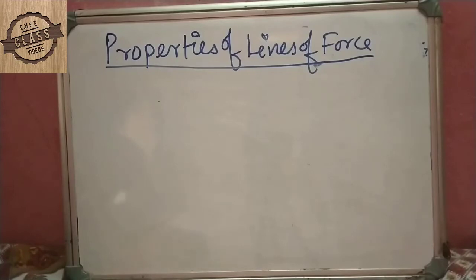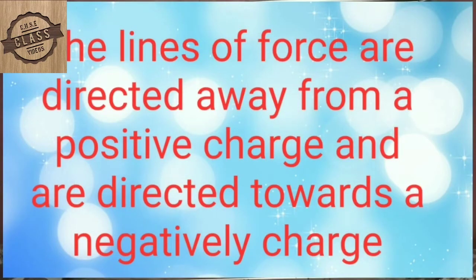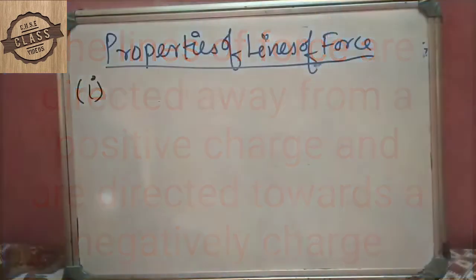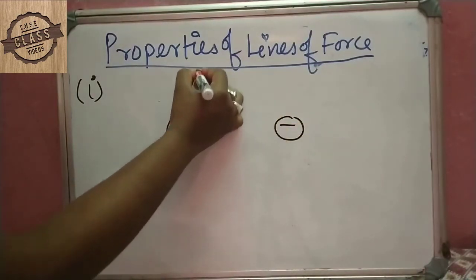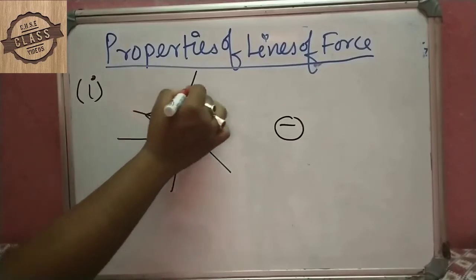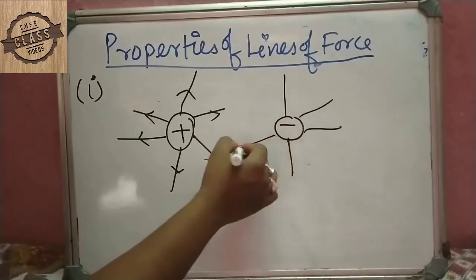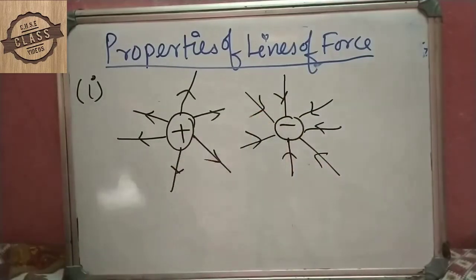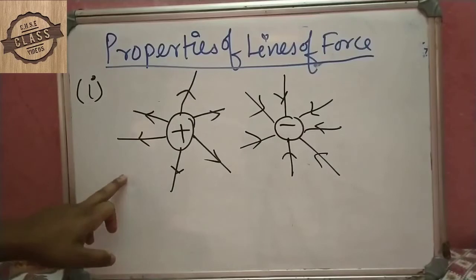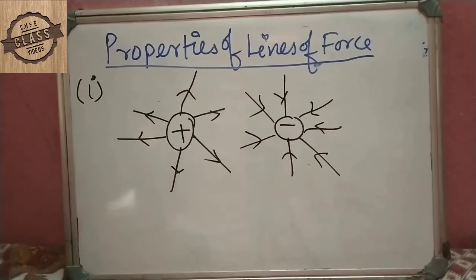The properties of lines of force: they are directed away from a positive charge and towards a negative charge. For a positive charge, the direction of the line of force is outward. For a negative charge, the direction of the line of force is inward.